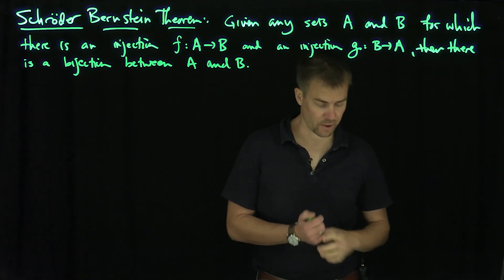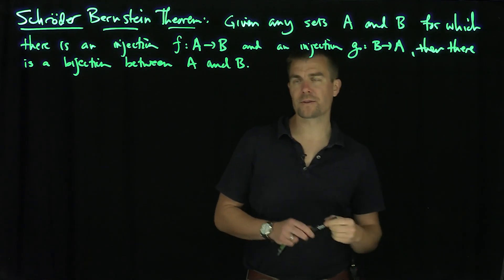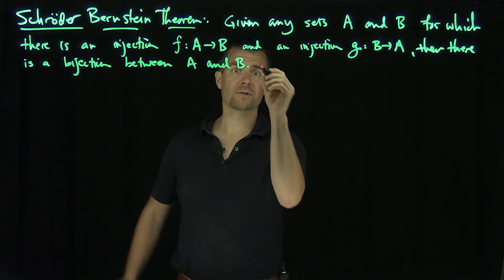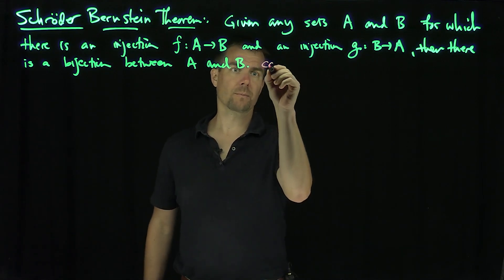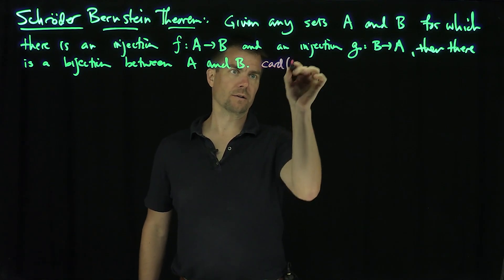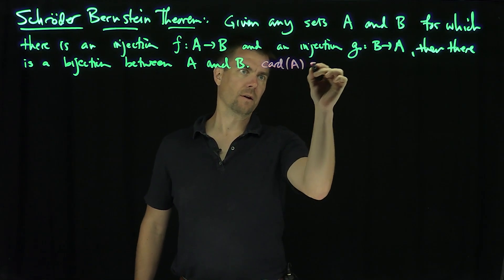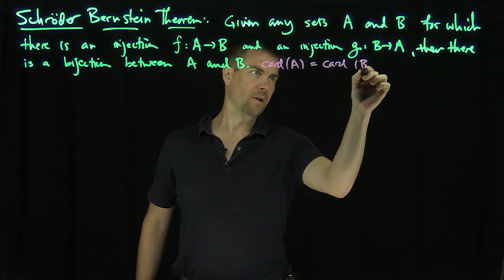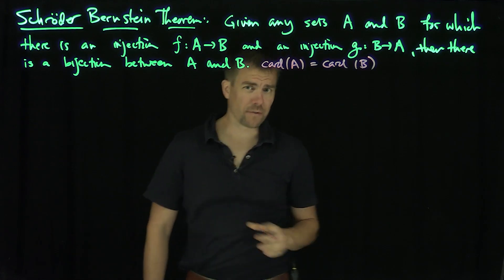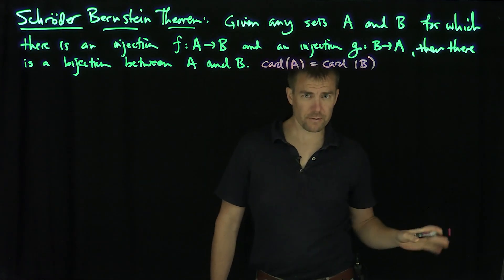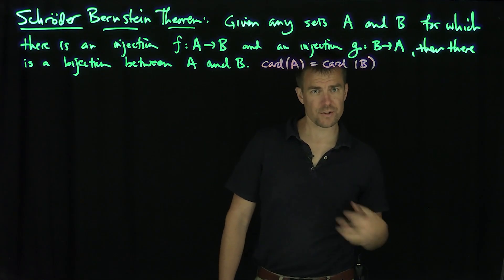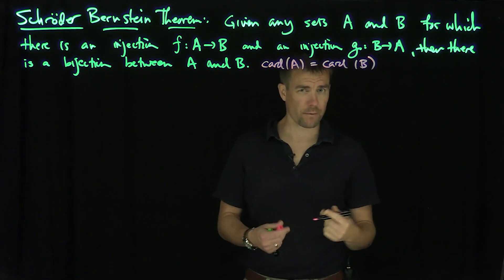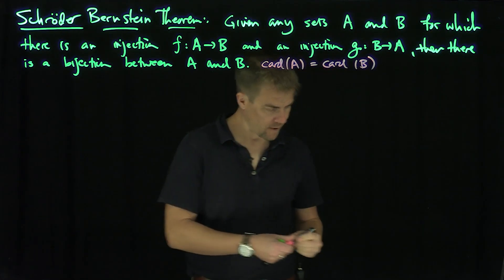A consequence of this is that if there is such a bijection, that means that the cardinality of A equals the cardinality of B. It's oftentimes much easier to find two injections than it is to find a bijection, so this is a very powerful theorem.